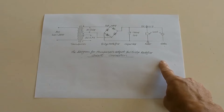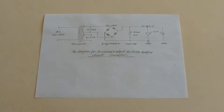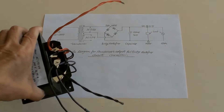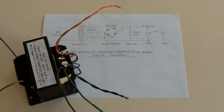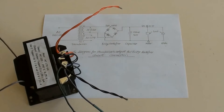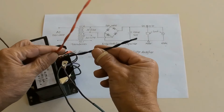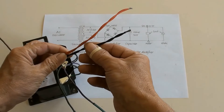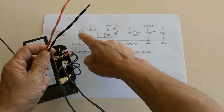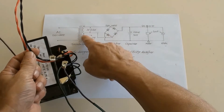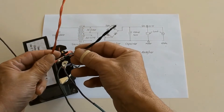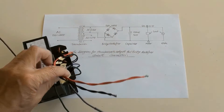And that is the transformer. It has two same output coils. This is the one, which is connected to terminals 3 and 4, as shown in the diagram.